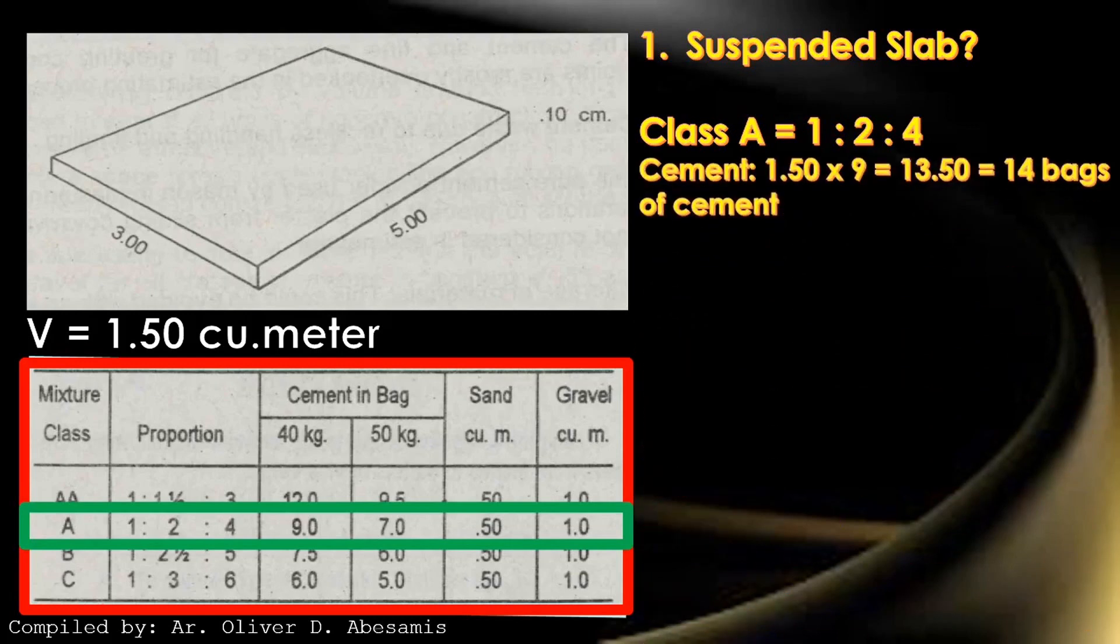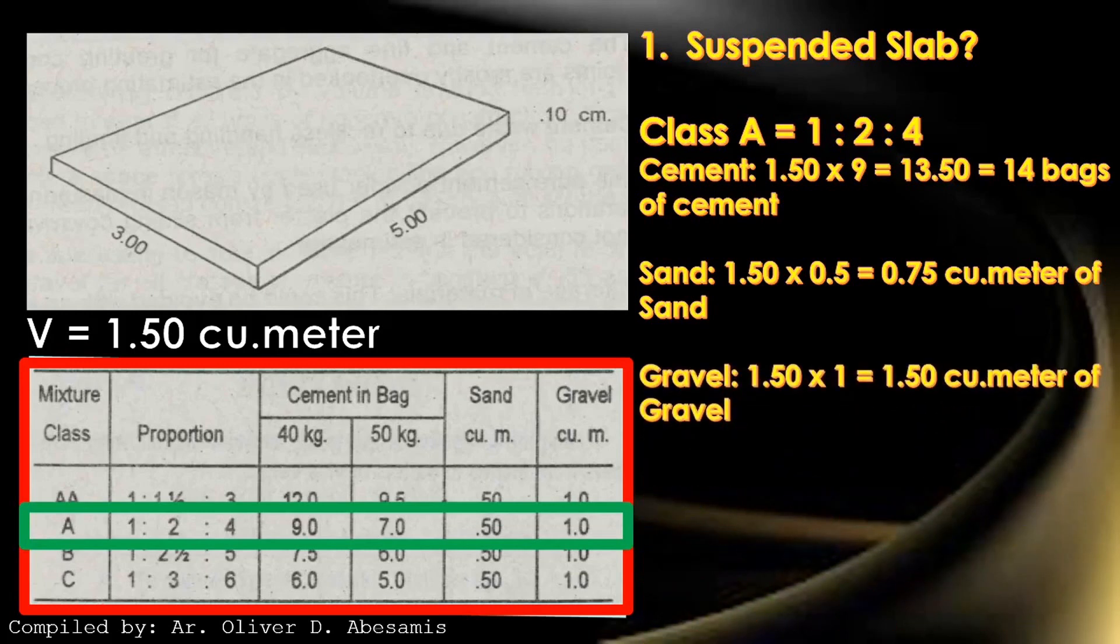Cement: 1.5 cubic meter multiply it to 9 is equal to 13.5 or 14 bags of cement. For sand, 1.5 cubic meter by 0.5 is equal to 0.75 cubic meter of sand. Gravel, 1.5 cubic meter by 1 will give us 1.5 cubic meter of gravel.